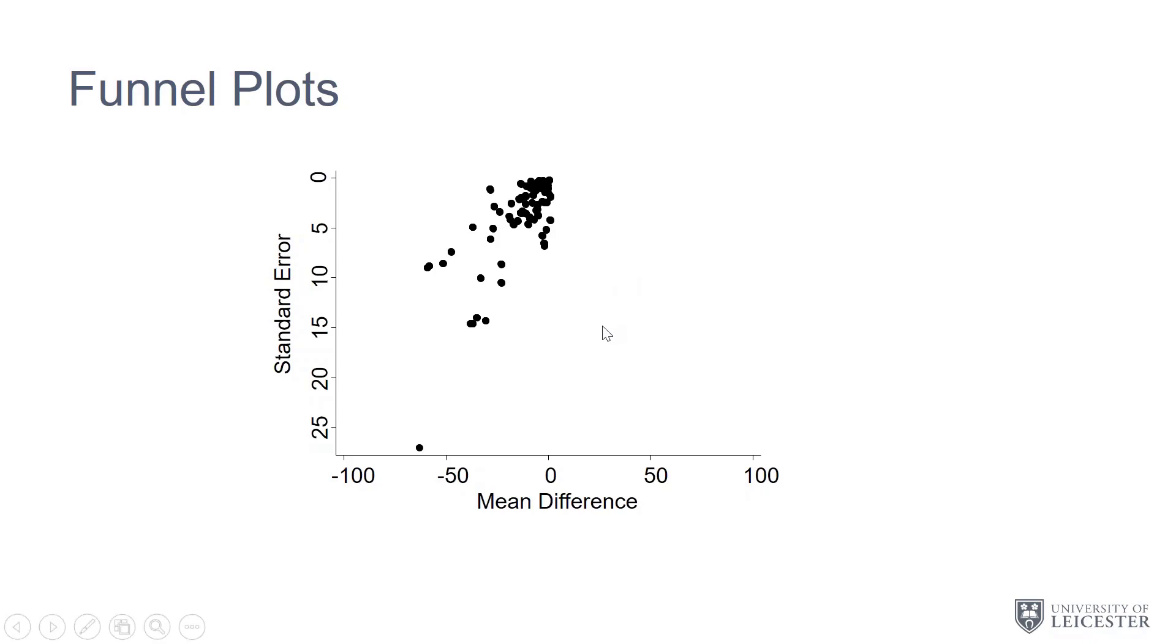Each point on this plot represents one of the trials in our meta-analysis. What we find is that larger trials often have smaller standard deviations, so they tend to be clustered towards the top of the plot. Smaller trials which have larger standard errors tend to be clustered around the bottom of the plot.